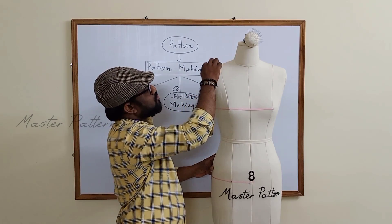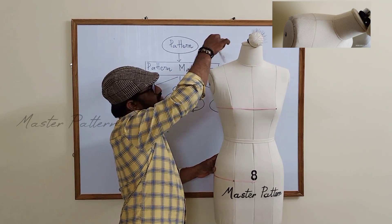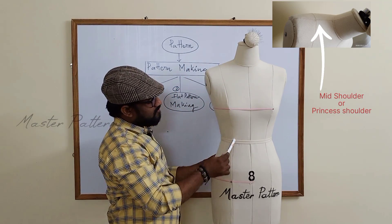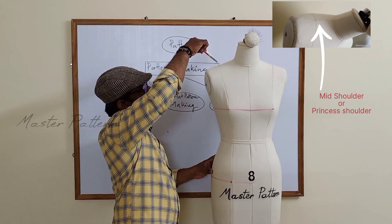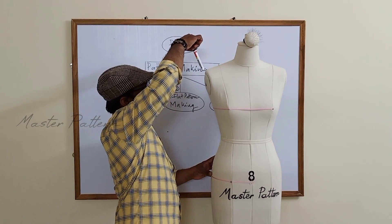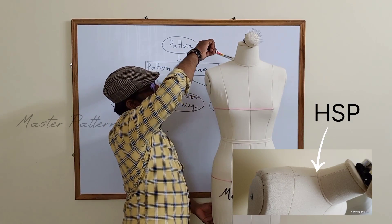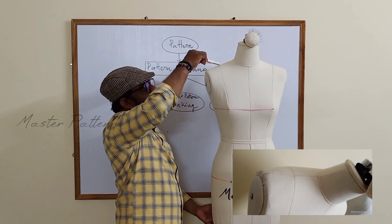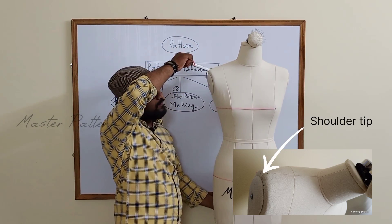In the shoulder area, the entire region from one end to the other is the shoulder. The center point where the princess line starts is the princess shoulder intersection point. There are three shoulder points: the highest point is called HSP — highest shoulder point; the middle is the mid shoulder point, also called the princess shoulder point; and the outer end is the shoulder tip.